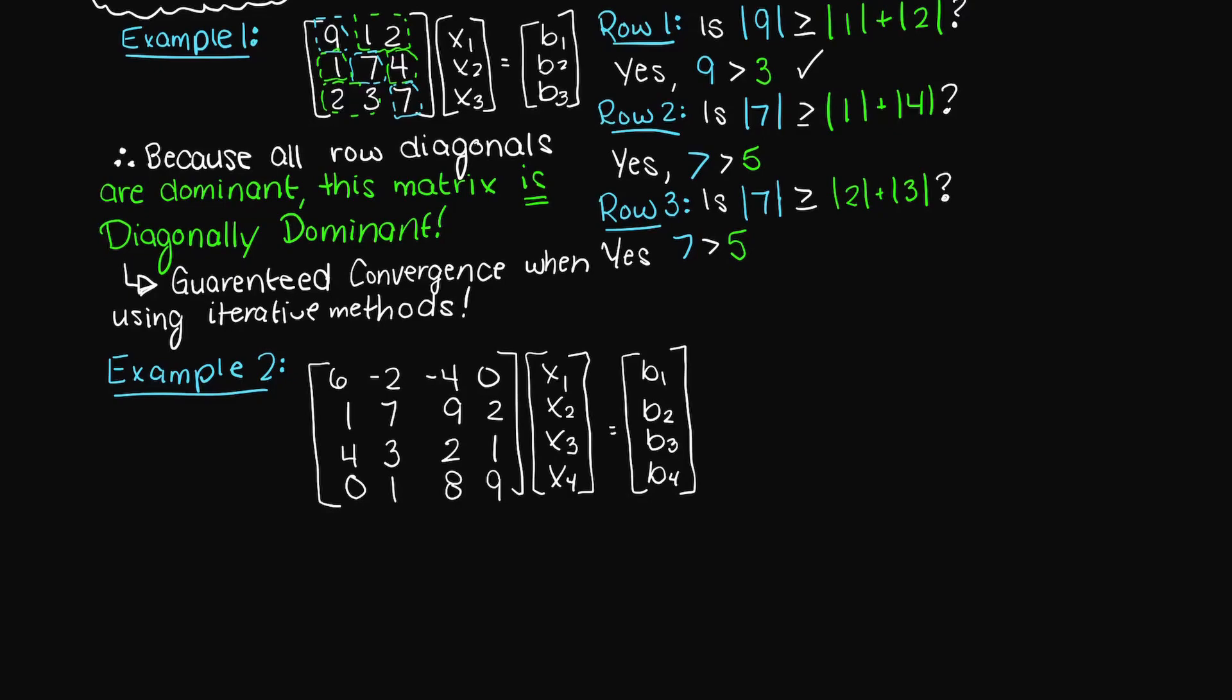Okay so for row one we again begin by testing to see if the magnitude of our diagonal element is larger or equal to the sum of the other elements in the row, and as you can see here it is indeed equal so we can advance to the next row.